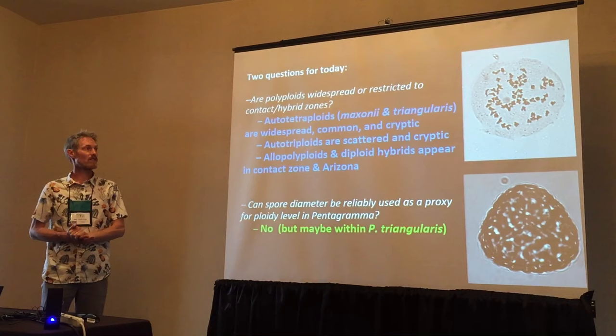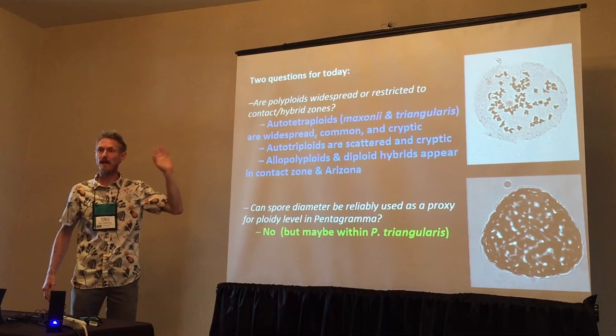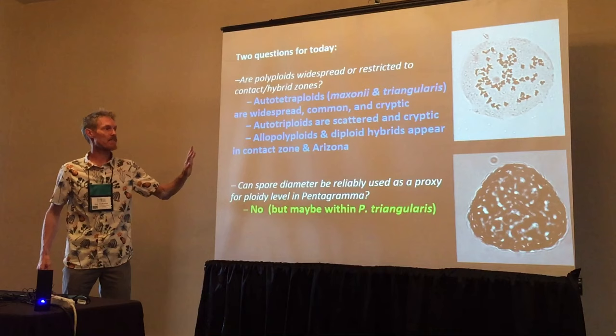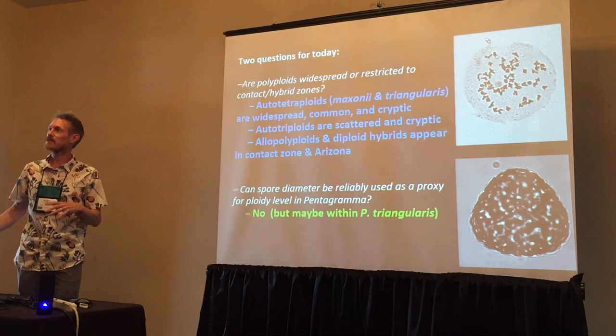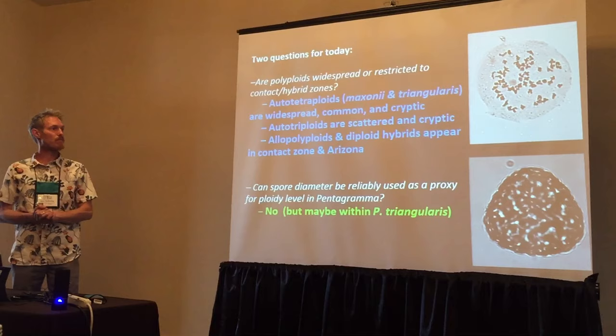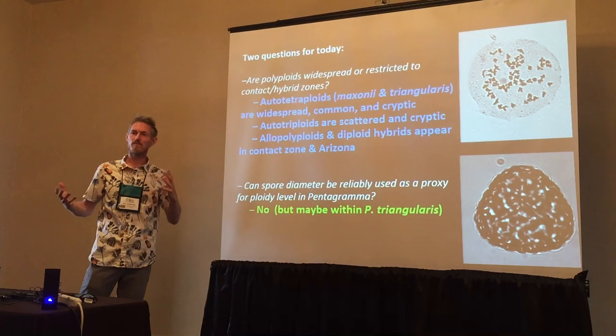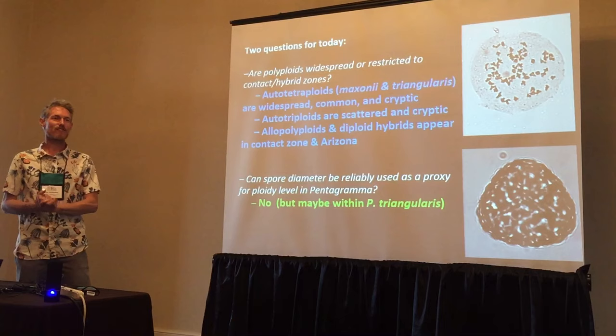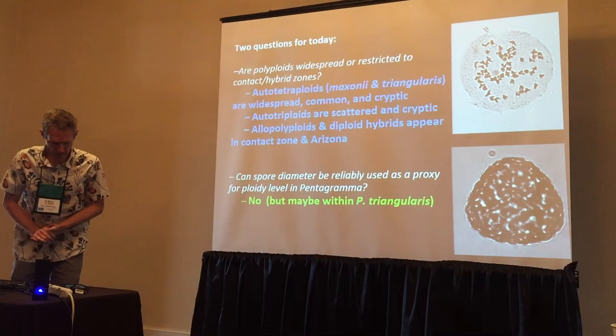Coming back to my original questions about the distribution of polyploids: the autotetraploids — just Maxoniae and triangularis autotetraploids — are widespread, common, and cryptic, meaning I can't tell them apart yet. The autotriploids are scattered and cryptic. Allopolyploids and diploid hybrids appear in that contact zone in the Peninsular ranges, but also out in Arizona — which is kind of cool, given we only have one of the diploid progenitor genomes, Maxoniae, out there. Can spore diameter be reliably used as a proxy for ploidy level? No — but maybe within triangularis. I'd like to collect more data to address that question.